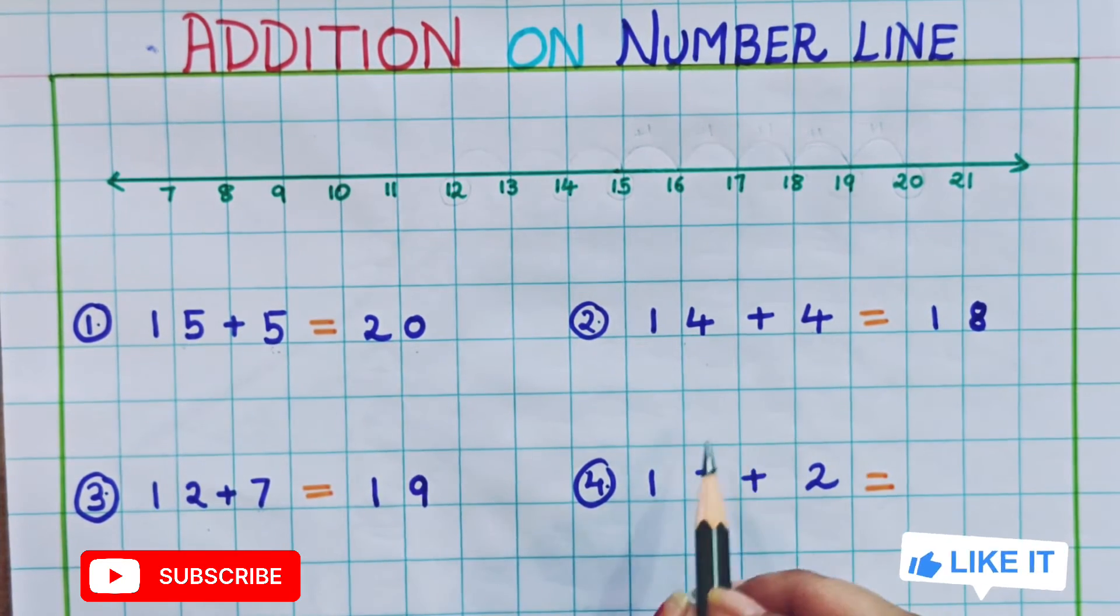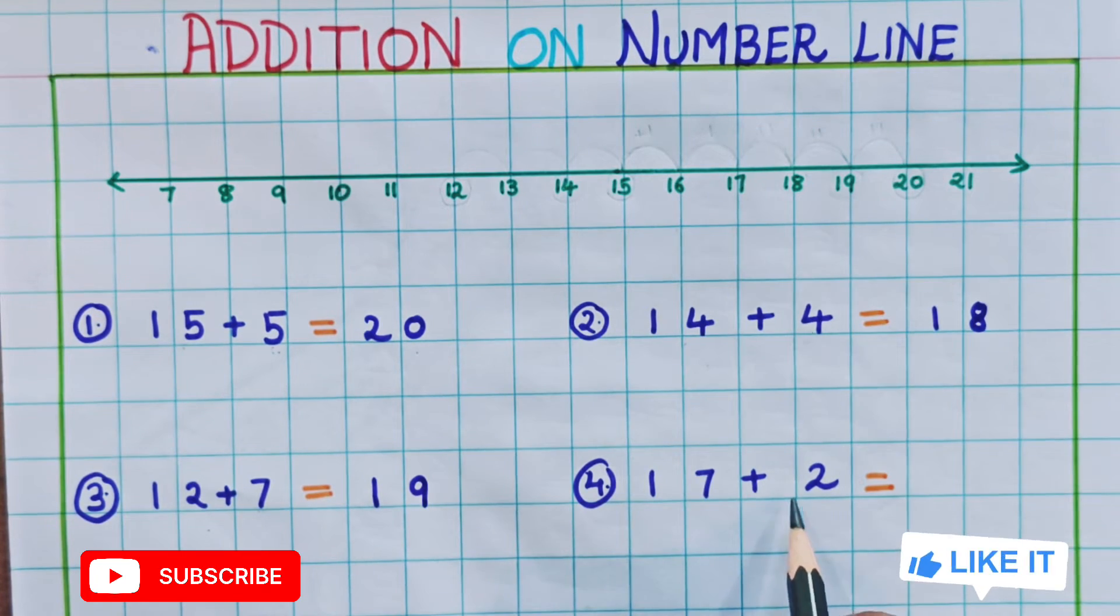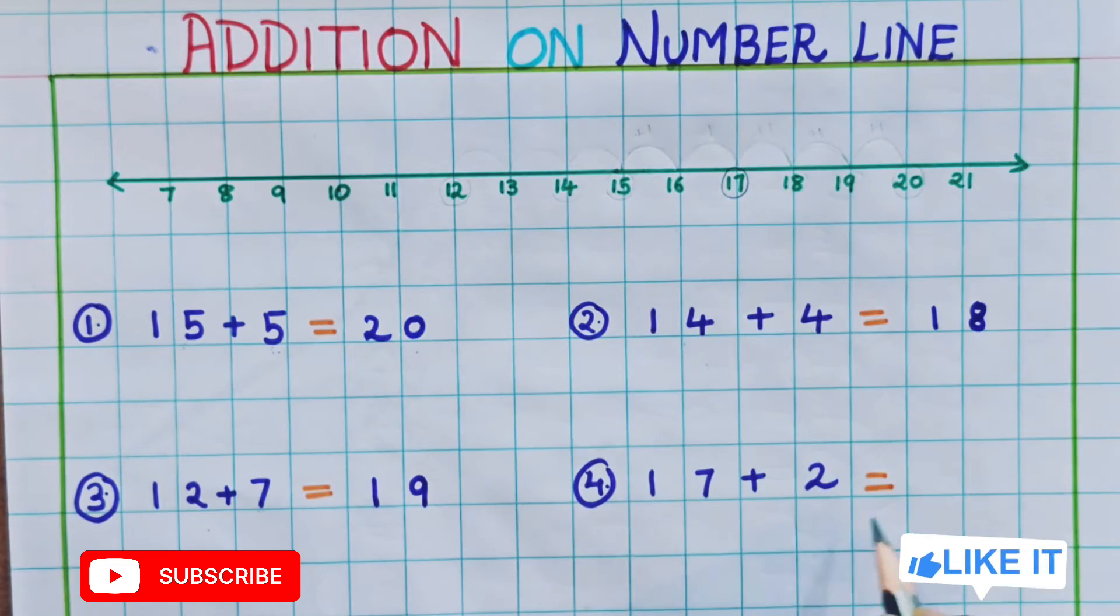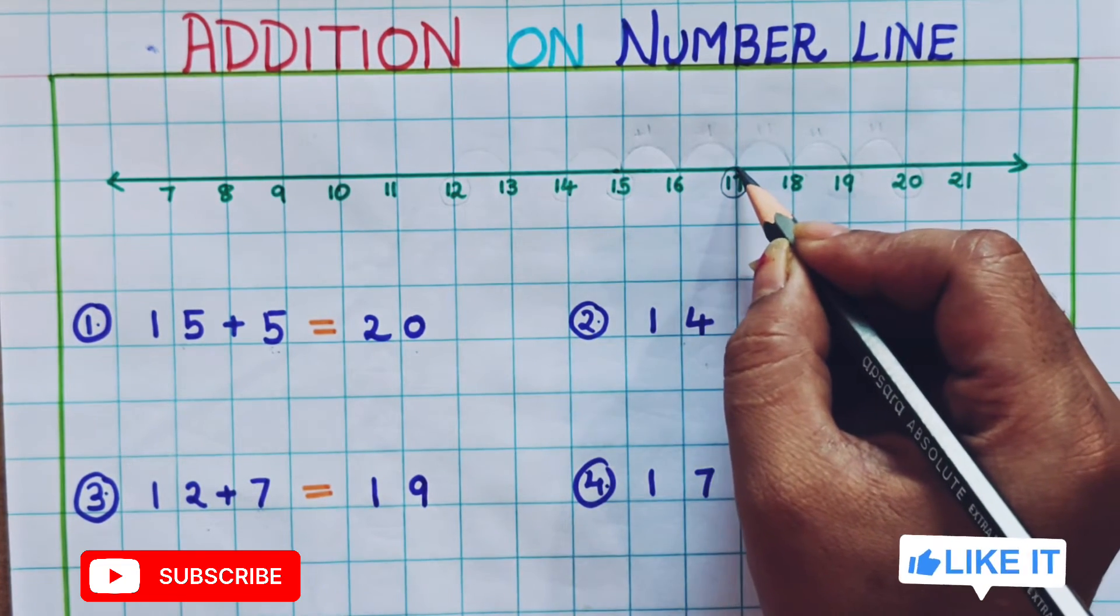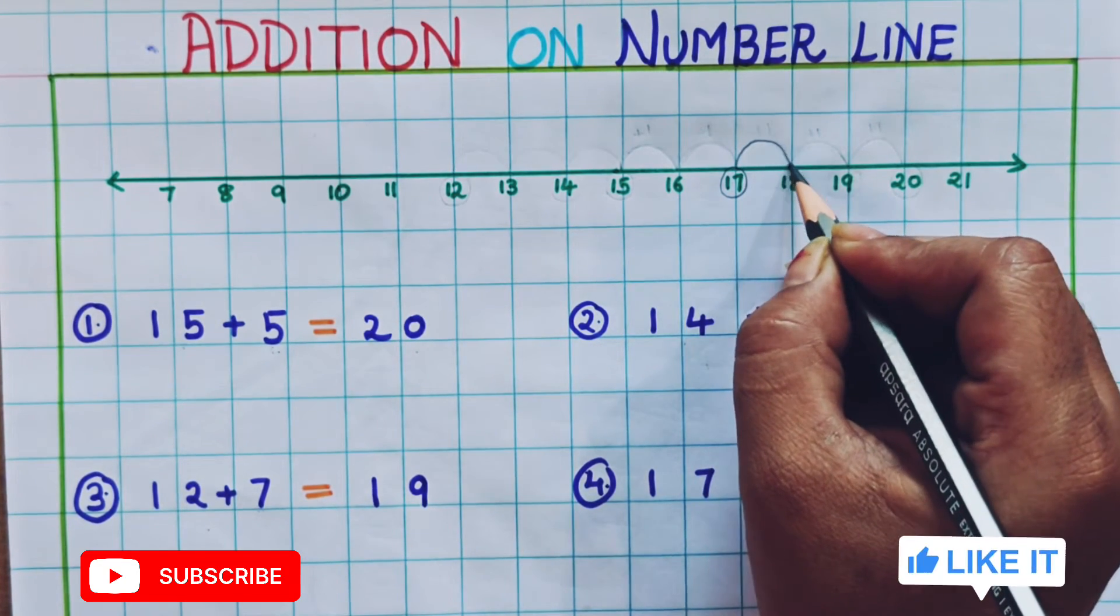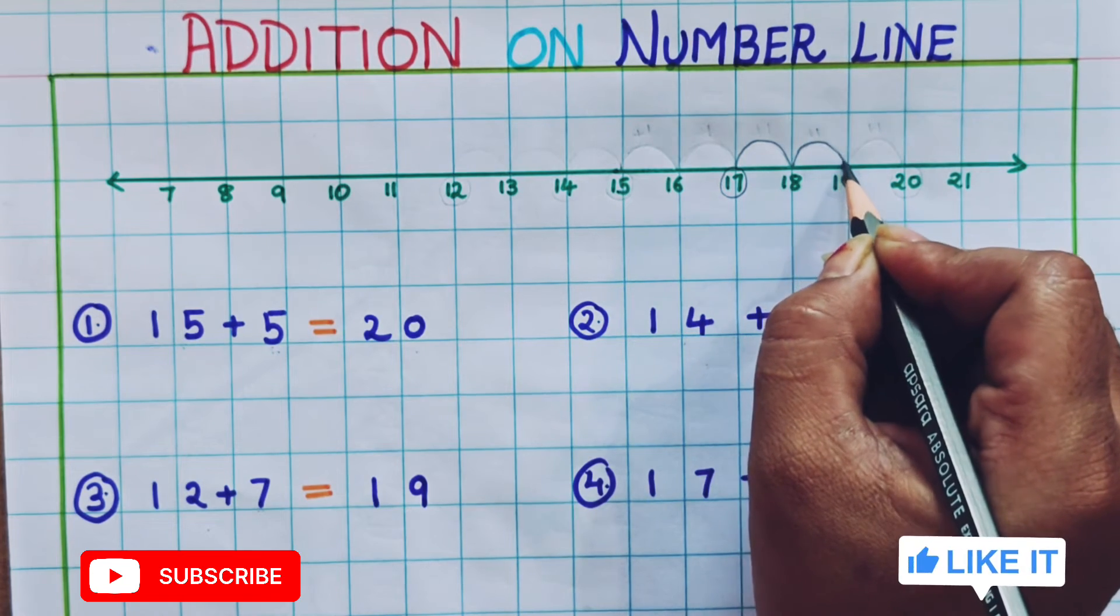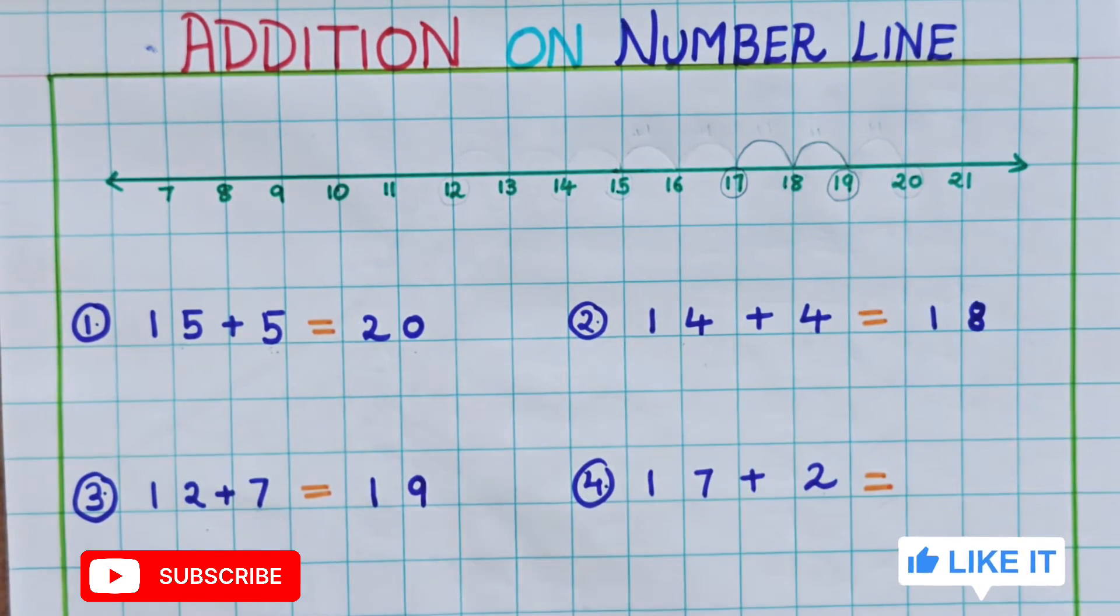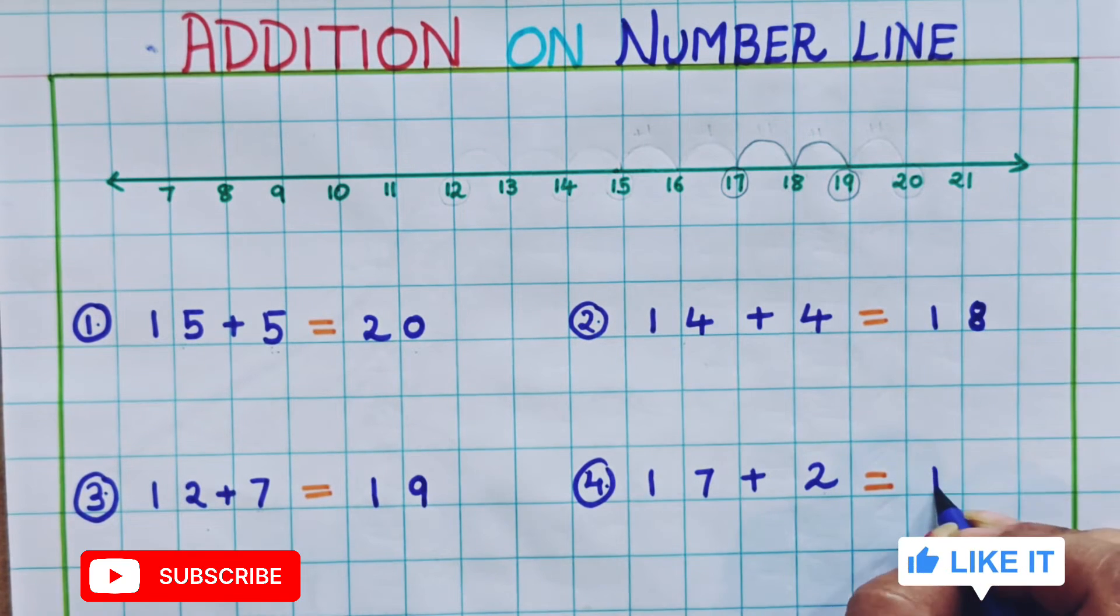Now let's see the next problem. 17 plus 2. First we locate 17 here. And now plus 2 means we have to go 2 steps forward. 1 and 2. So what is the answer we are getting? 19 again. So 17 plus 2 is 19.